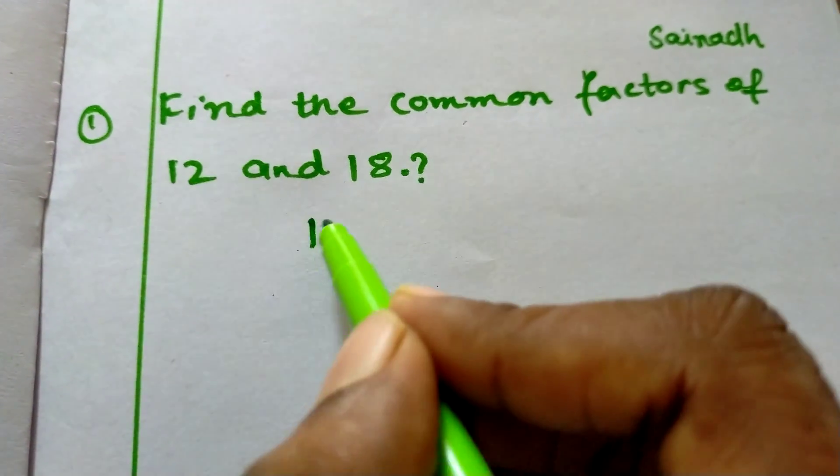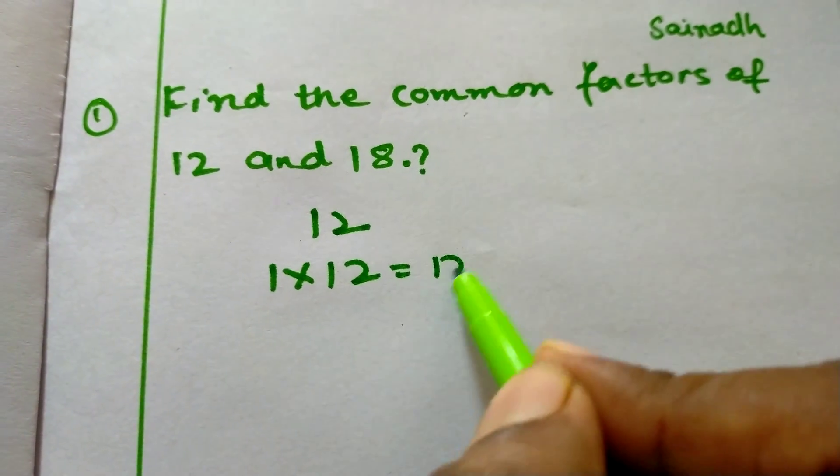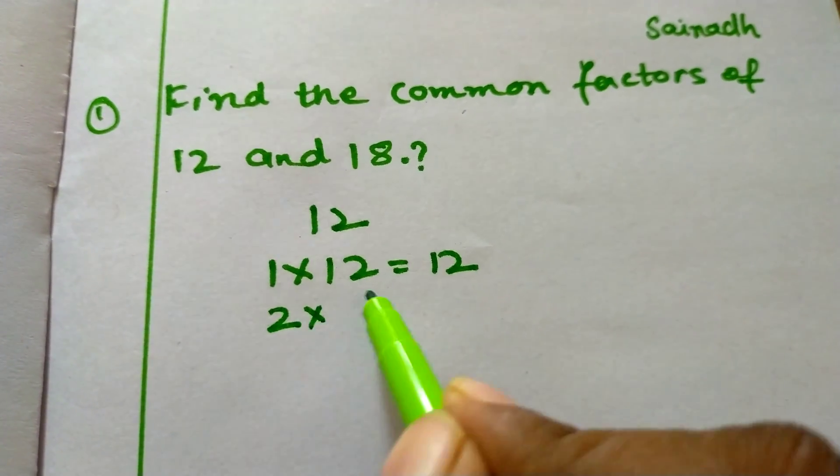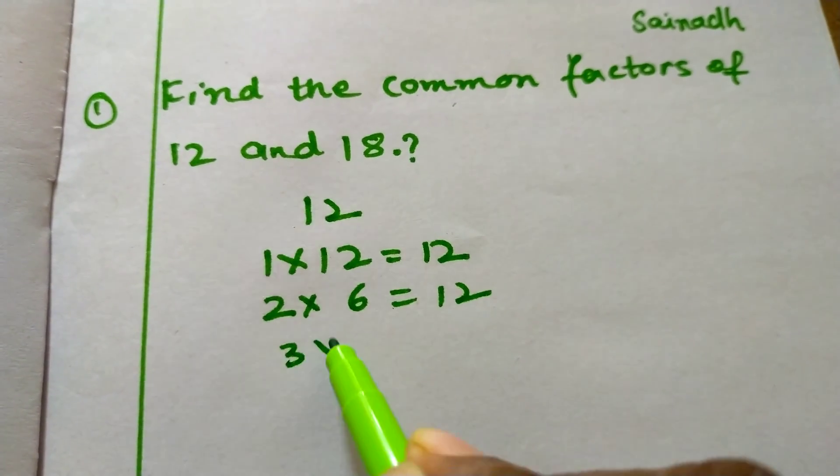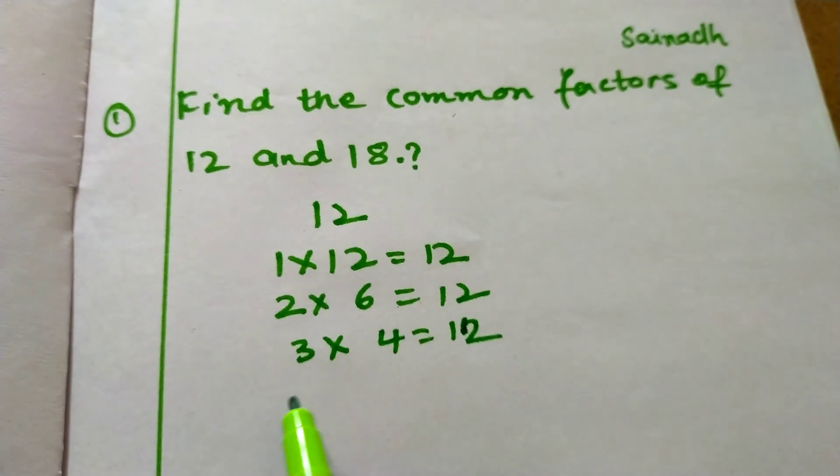First, we have to find out the factors of 12. So, 1 times 12 equals 12, 2 times 6 equals 12, and 3 times 4 equals 12.